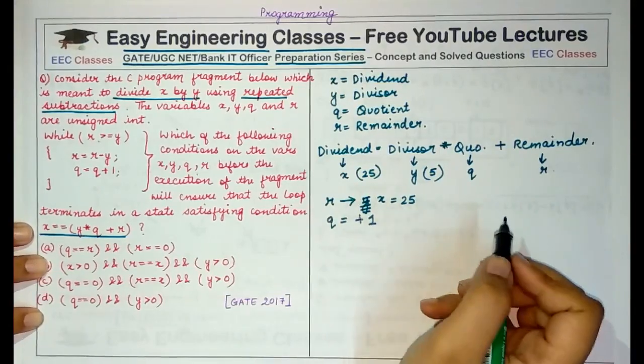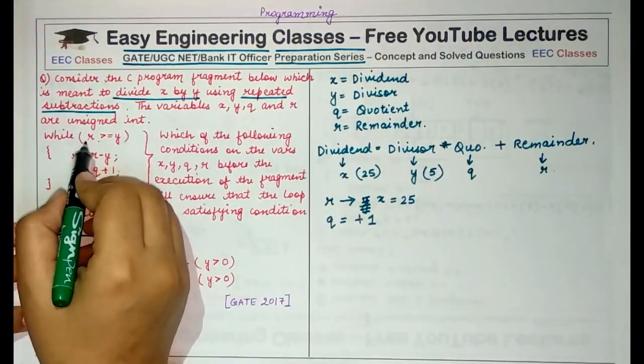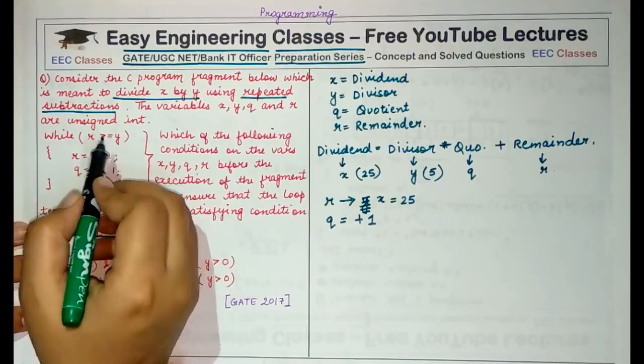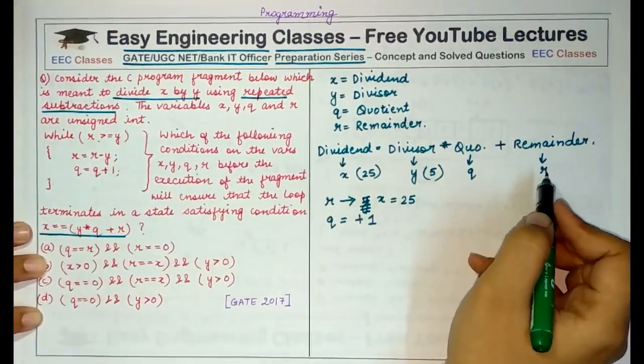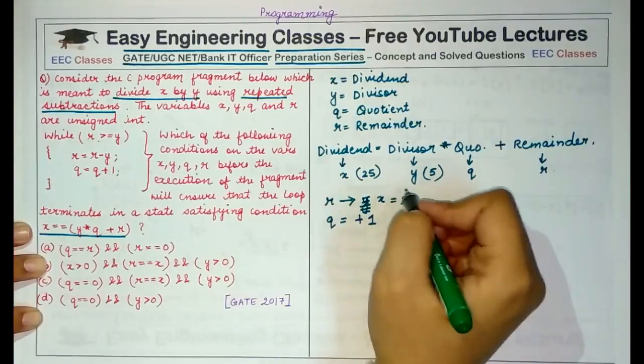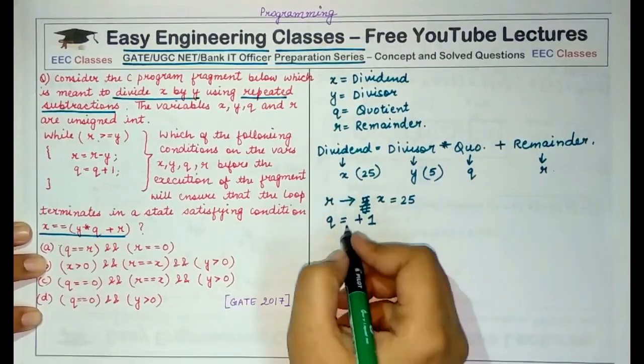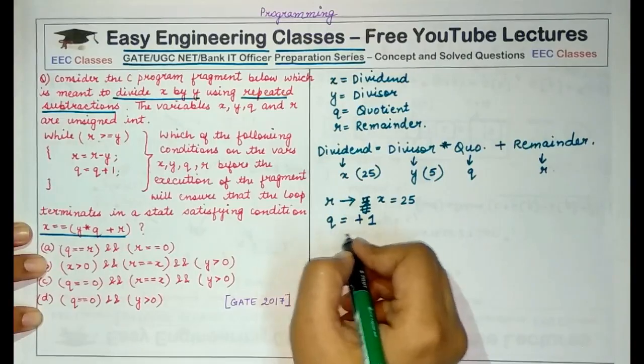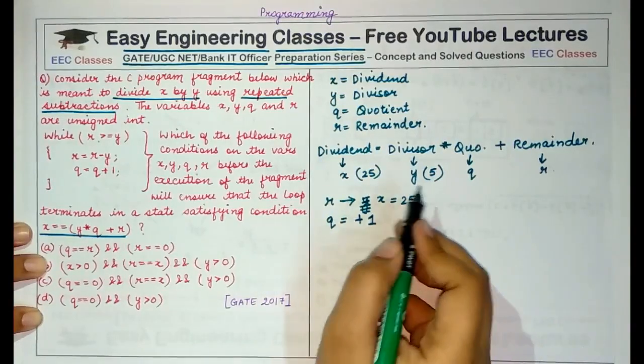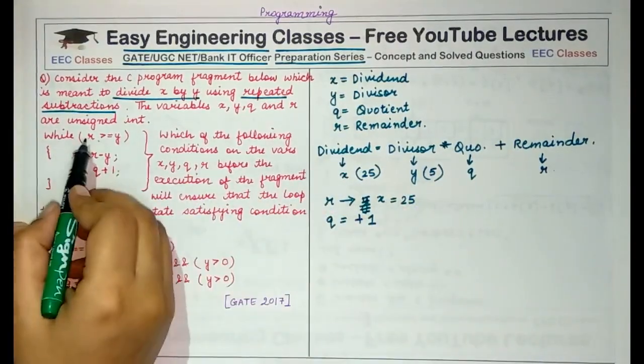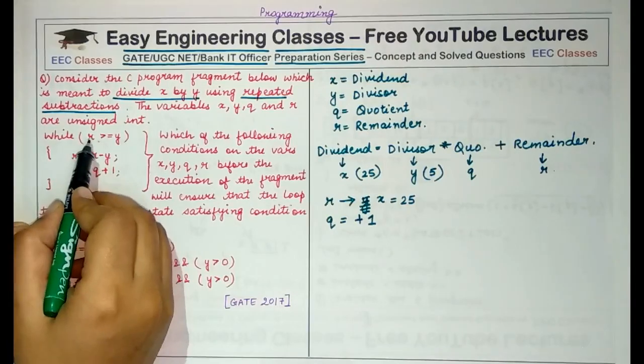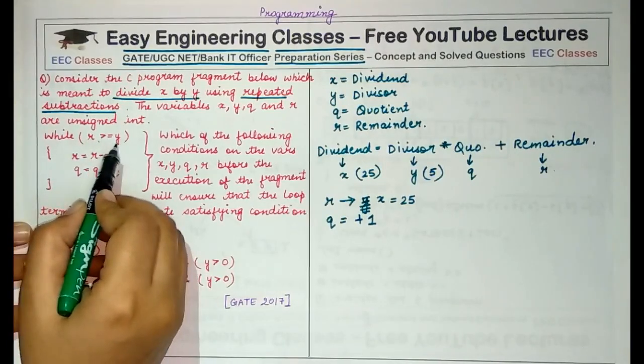Then at the end when this condition becomes false, that means when the remainder becomes smaller than 5, we will come to know how many times actually we have subtracted 5 from 25.